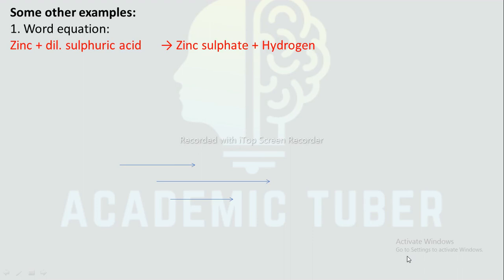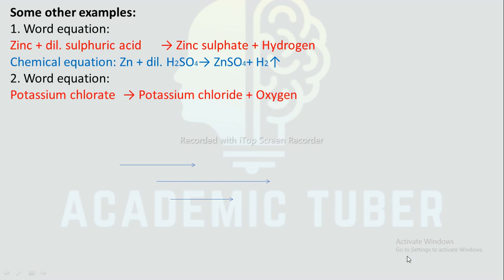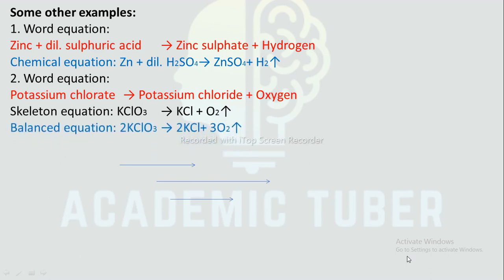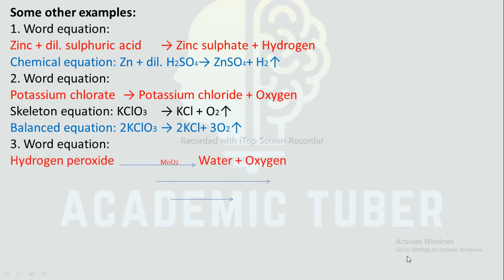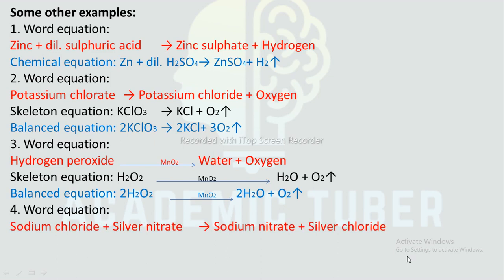Some other examples. Word equation: Zinc plus dilute sulphuric acid gives zinc sulphate plus hydrogen. Skeletal equation: Zn + H₂SO₄ → ZnSO₄ + H₂. Word equation: Potassium chlorate gives potassium chloride plus oxygen. Skeletal equation: KClO₃ → KCl + O₂. Balanced equation: 2KClO₃ → 2KCl + 3O₂. Word equation: Hydrogen peroxide in the presence of manganese dioxide gives water plus oxygen. Skeletal equation: H₂O₂ → H₂O + O₂. Balanced equation: 2H₂O₂ → 2H₂O + O₂ in the presence of MnO₂. Word equation: Sodium chloride plus silver nitrate gives sodium nitrate plus silver chloride. Chemical equation: NaCl + AgNO₃ → NaNO₃ + AgCl.